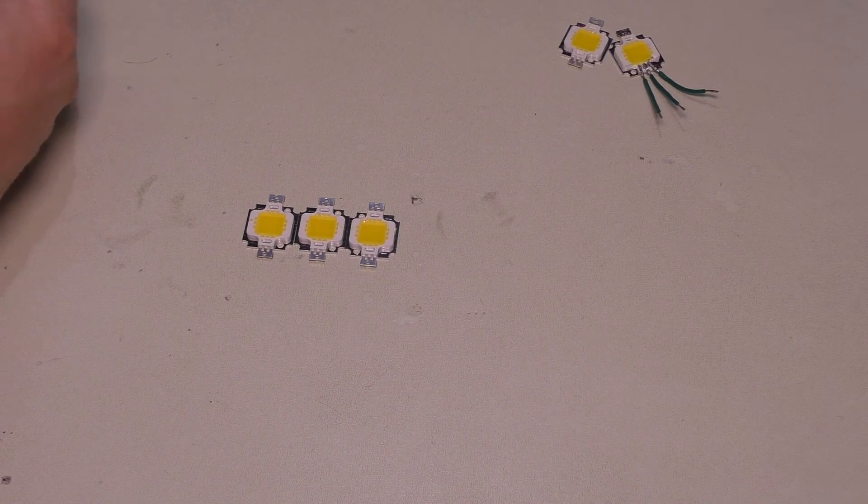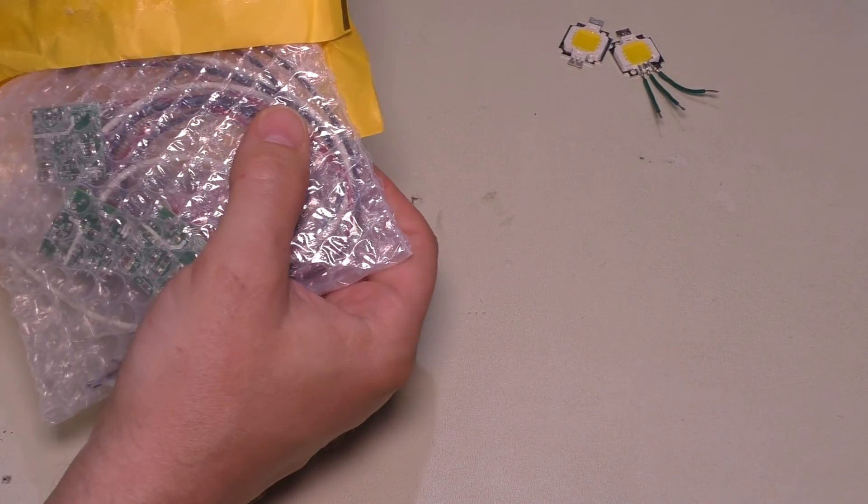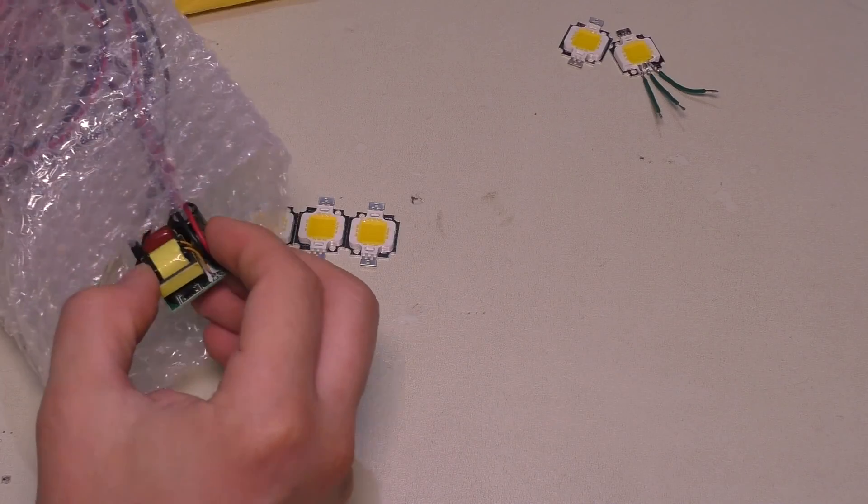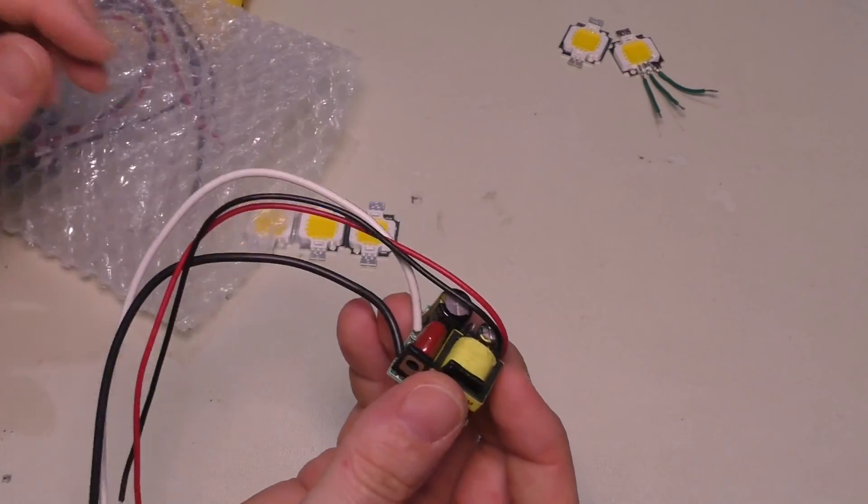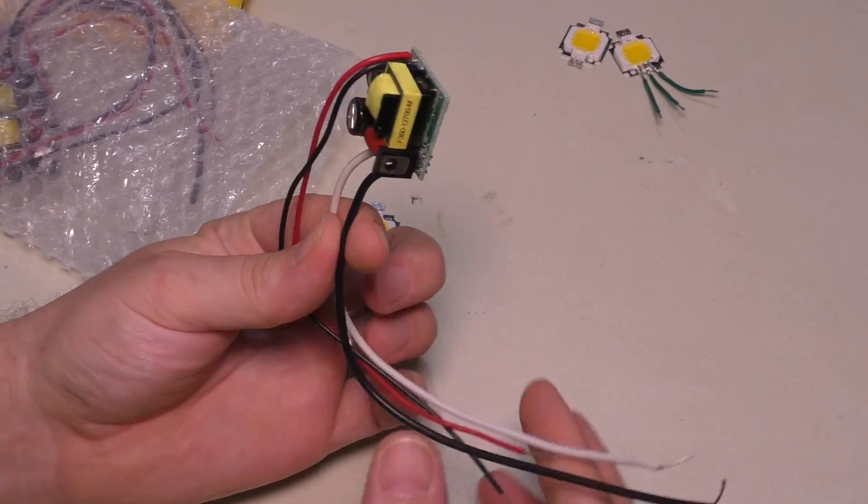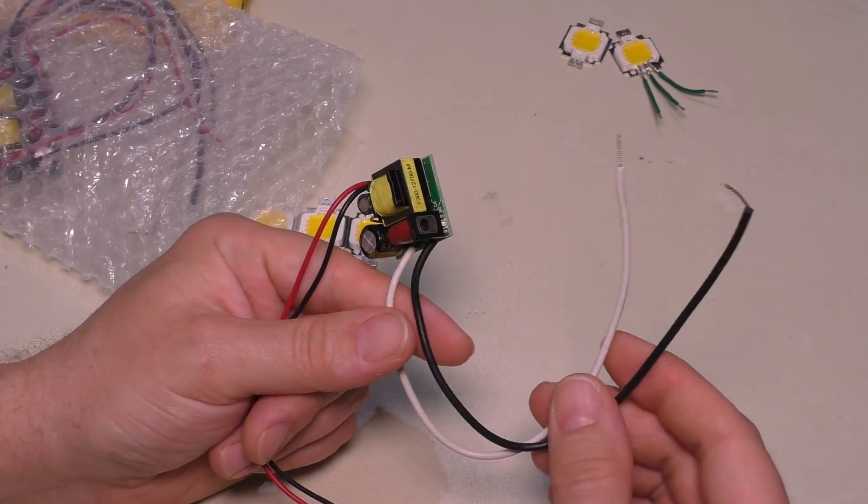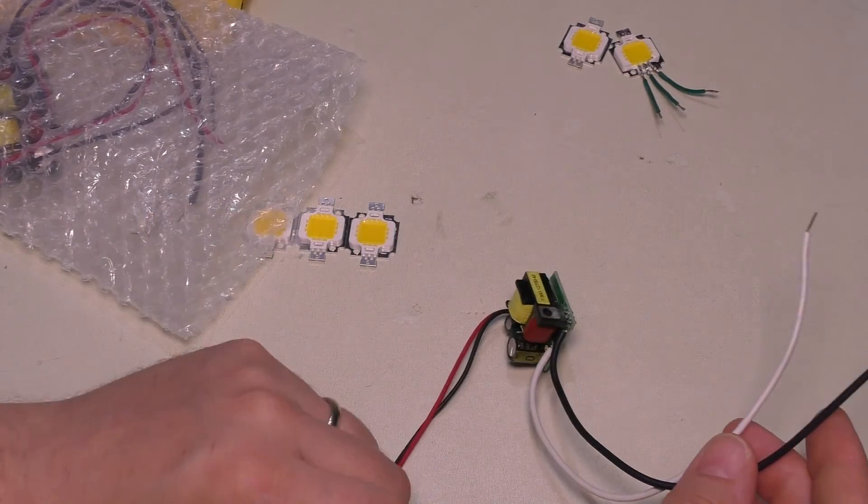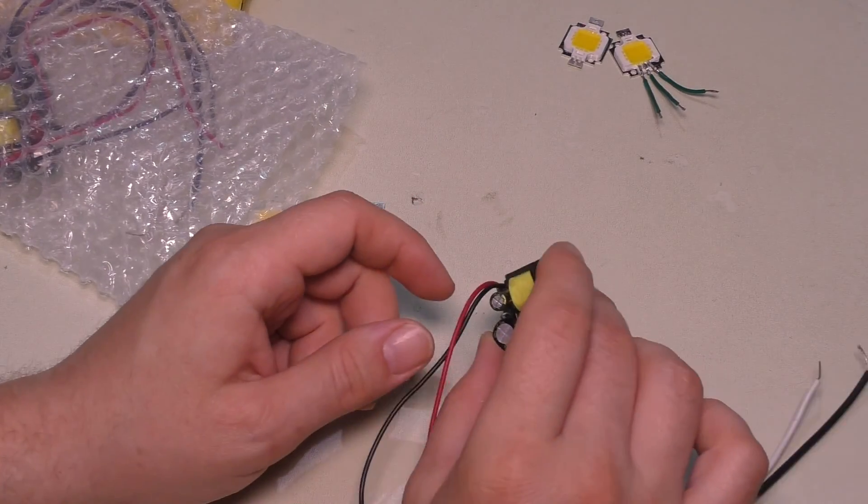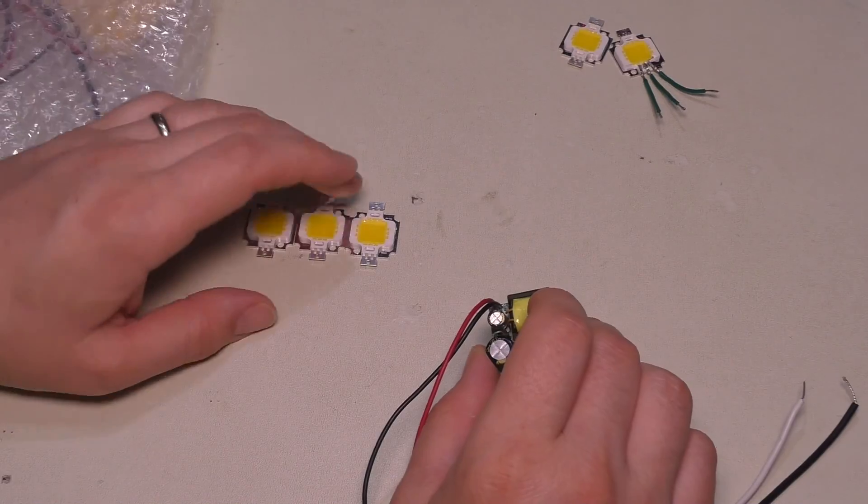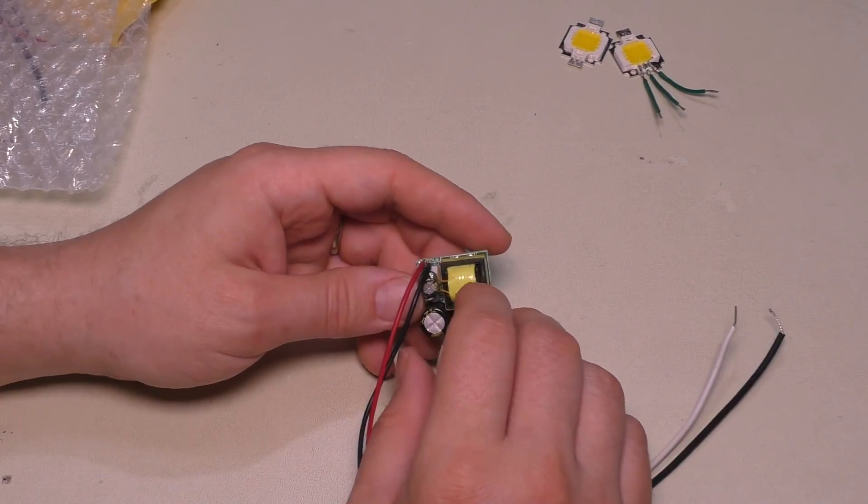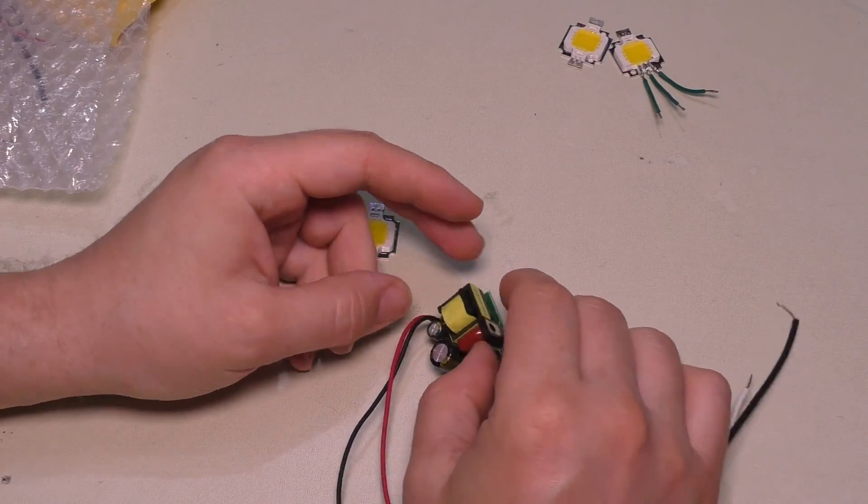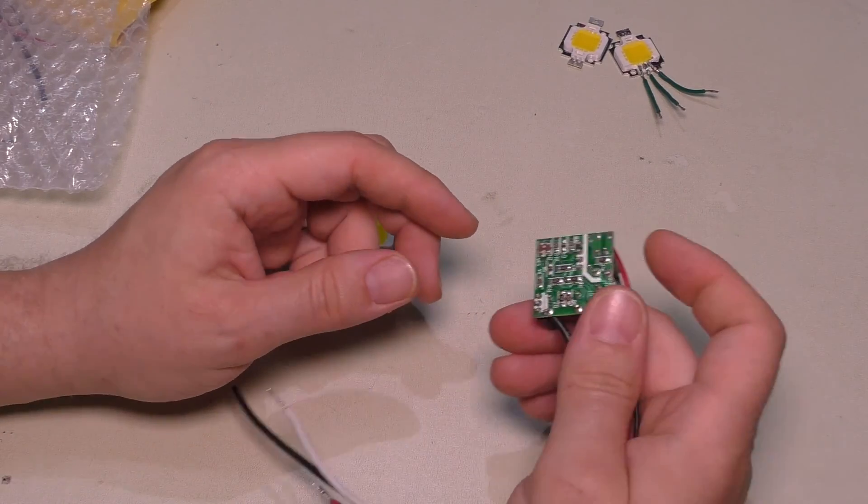So off to eBay I went and I ended up getting this package here, shipped directly from China. These are little mini power supplies that are meant to do exactly what I want. It takes regular 120 volt line voltage here, converts it down to 12 volts here, and these are rated exactly for these 10 watt LEDs.